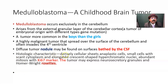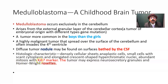Histologic characteristics include densely cellular sheets of anaplastic small cells with scant cytoplasm and elongated crescent-shaped hyperchromatic nuclei. There is abundant mitosis because it is a cancer, so a lot of cell division goes on — abundant mitosis. The Ki-67 marker is used as a tumor marker. The tumor may express neurosecretory granules, and rosettes may be found on histopathological study.